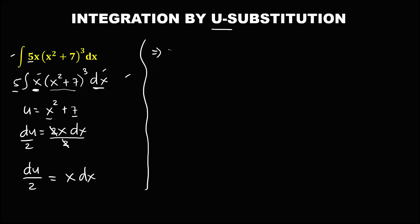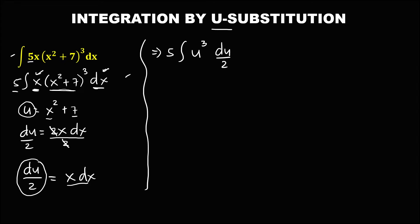Then apply now the u-substitution — bring down the constant. Then the integral of x squared plus 7 equals u, so this is u to the power 3. Then for this x dx, x dx is equal to du over 2, so we have du over 2. Then we need to put this denominator 2 outside, so this becomes 5 over 2, then the integral of u to the power 3 du.